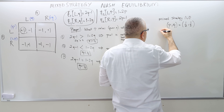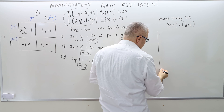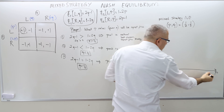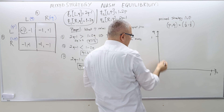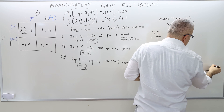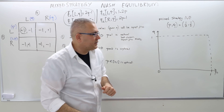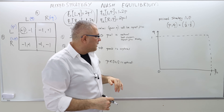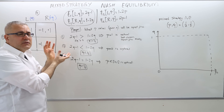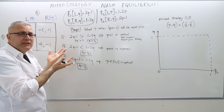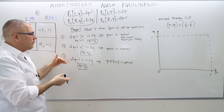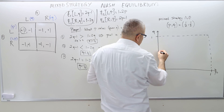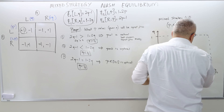I'm going to draw the best response function. I have axes P and Q, each ranging between zero and one, so the strategies live in a unit square. Drawing this step function requires some care. Q equals one-half is the threshold — it's the midpoint. When Q is exactly equal to one-half, any P between zero and one is the best response.